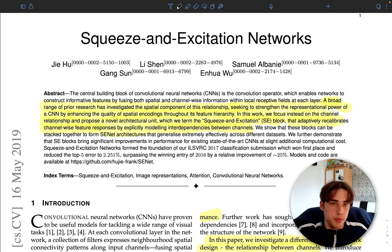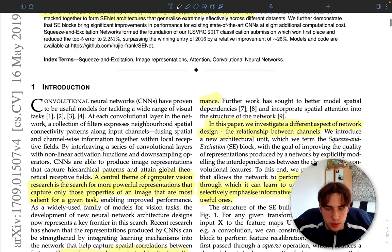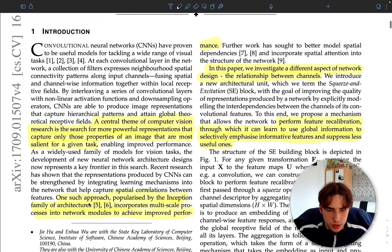We build an additional network that helps to select these channels which are important for certain classes. Before we dive into the paper, I'm going to briefly give you background on what was going on back then. The main theme is we can't just add more layers because it's computationally expensive, so we need to somehow play with the network to get strong representation. They say here a central theme of computer vision research is search for more powerful representation that captures only those properties of an image that are most salient for a given task.